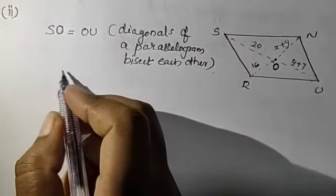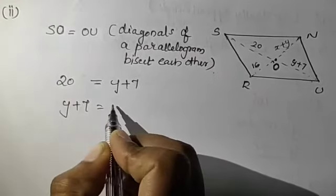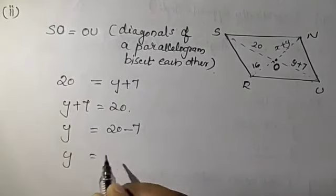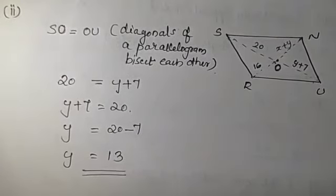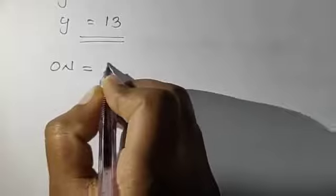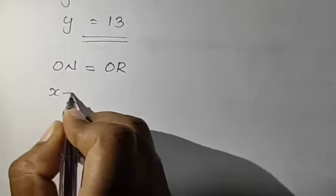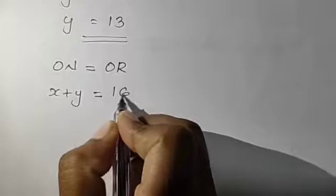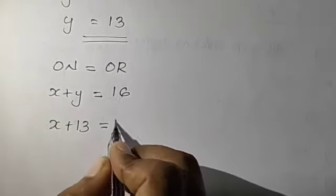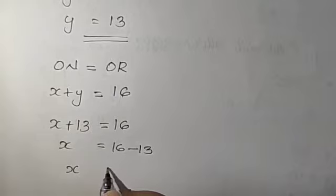SO is 20, which equals Y plus 7. From this, Y equals 20 minus 7, so Y is 13. From the other diagonal, ON equals OR because the diagonals of a parallelogram bisect each other. ON is X plus Y equals OR which is 16. Since Y is 13, X plus 13 equals 16. So X equals 16 minus 13, that is X equals 3.